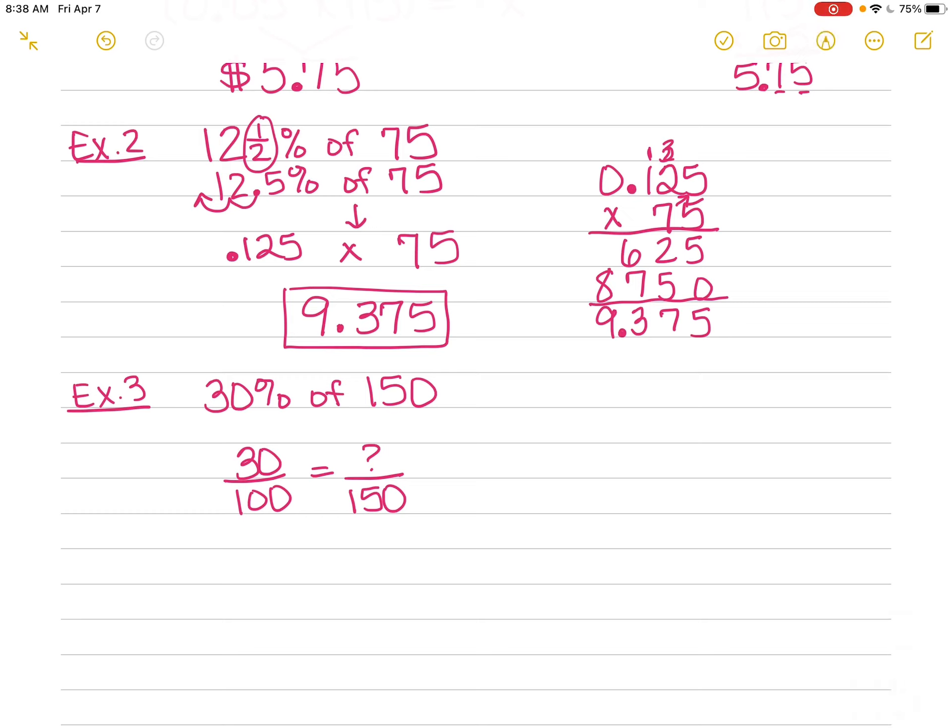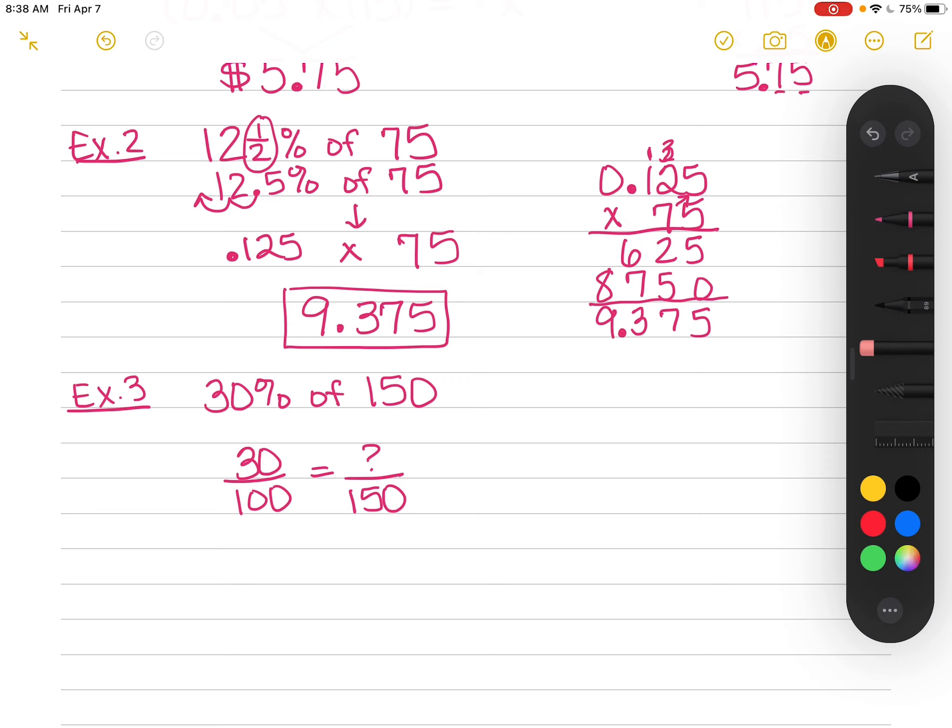Now, I'm not going to leave that question mark. Instead, I'm going to have an x right there, or if you want to put an n, whatever variable you want. When I say 30% of 150, I know that it's going to be a smaller number, right? Because 30% of 150 is going to be smaller.